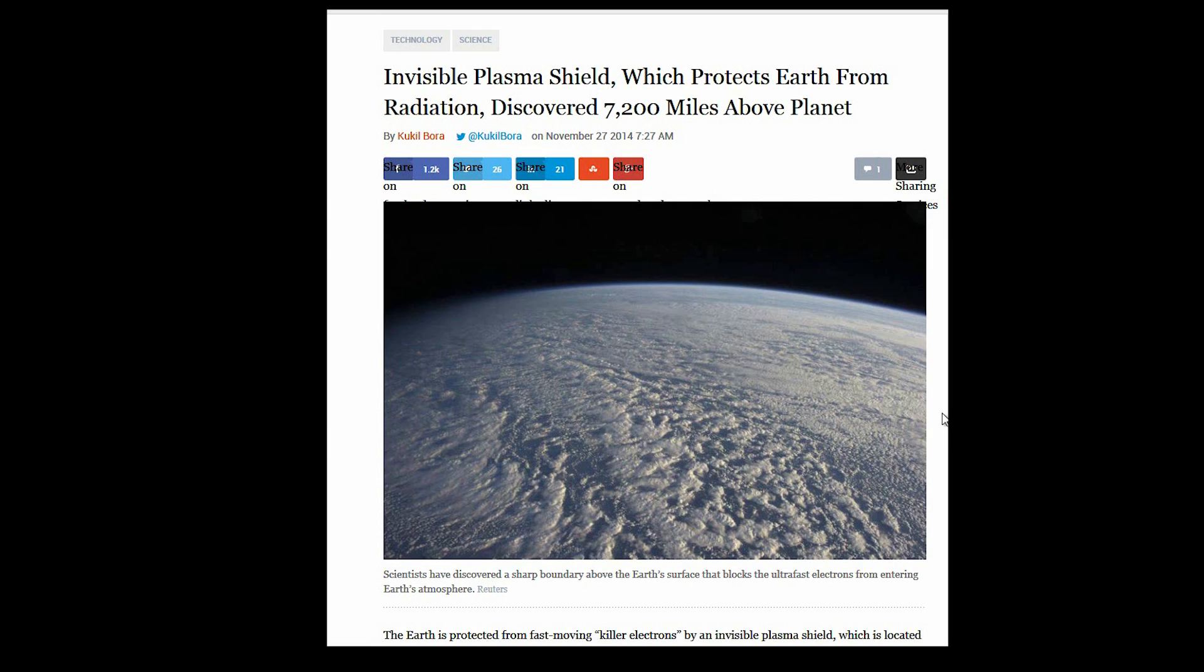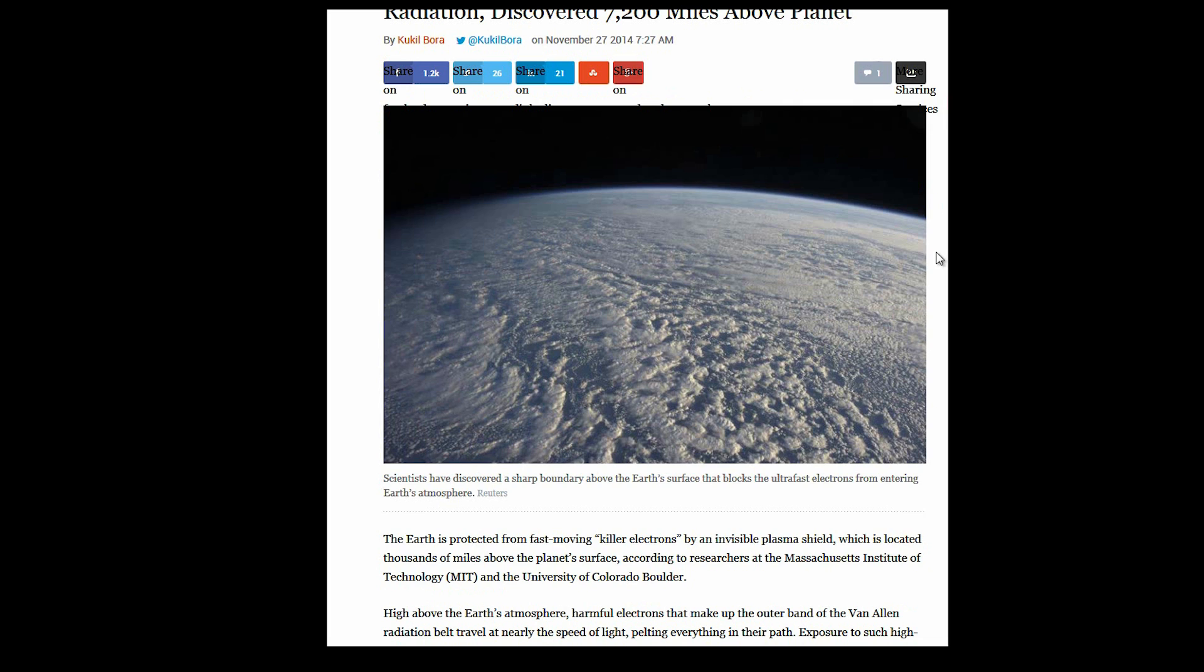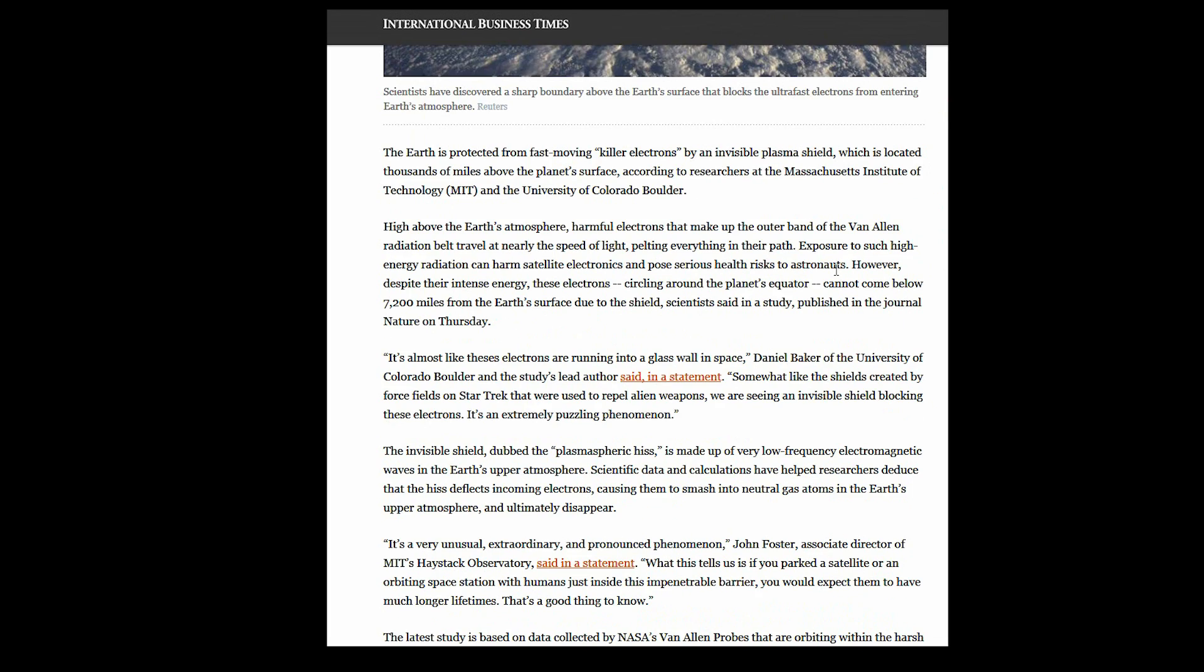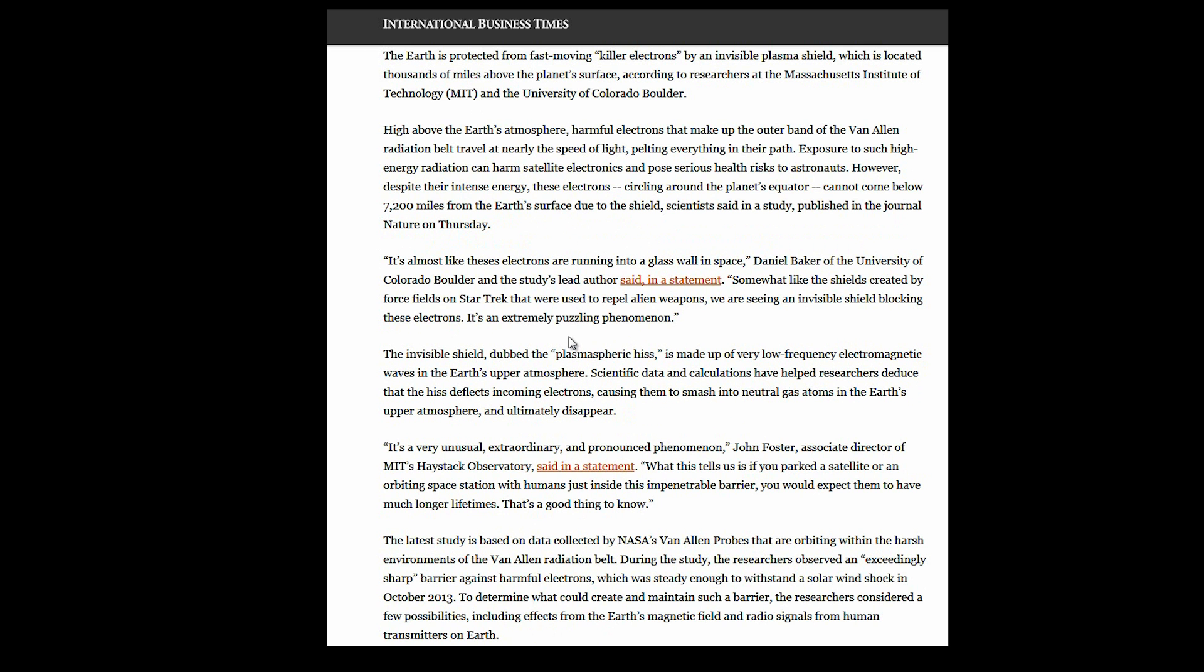Okay, so here is the MIT article. I will put the link in the description of this clip if anyone wants to see it. As you can see, invisible plasma shield which protects Earth from radiation discovered 7,200 miles above the planet. So let's get down into this article a little bit. There's just a couple things I want to pull out. Earth is protected from fast moving killer electrons by an invisible plasma shield.